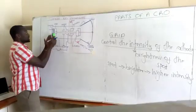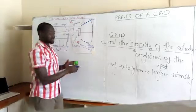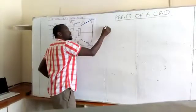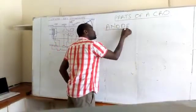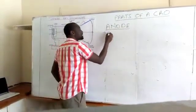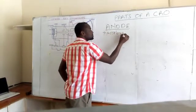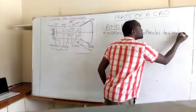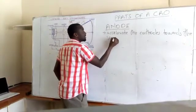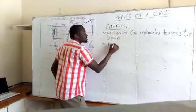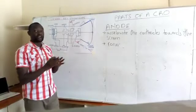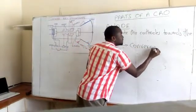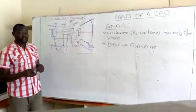After the grid, we have the anode. The anode is the last part of our electron gun. What are the functions of the anode? The anode has two functions: one is to accelerate the cathode rays towards the screen, and two is to focus the cathode rays on the screen. Focusing will also use another term — we talk of converge; it converges the electrons or the cathode rays on the screen.